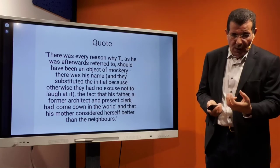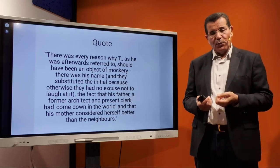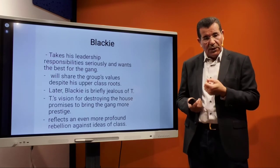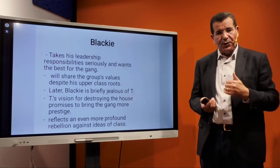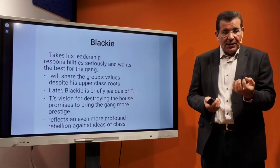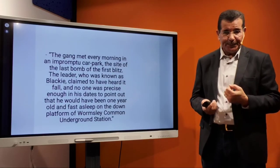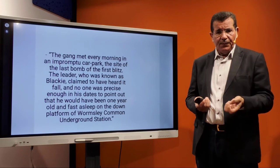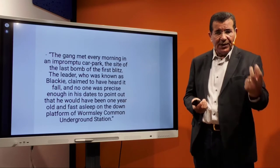The problem of generations and the changes in the destiny of the dominant class after the Second World War mean that the house becomes the target of the adolescents — a symbol of the construction of the old generation. Blackie was the leader before T arrived, and T comes with a new vision of destroying the house. He promises to bring the gang more prestige, reflecting a more profound rebellion against ideas of class. The gang met every morning, and the name of the gang itself conveys the idea of destroying from within.